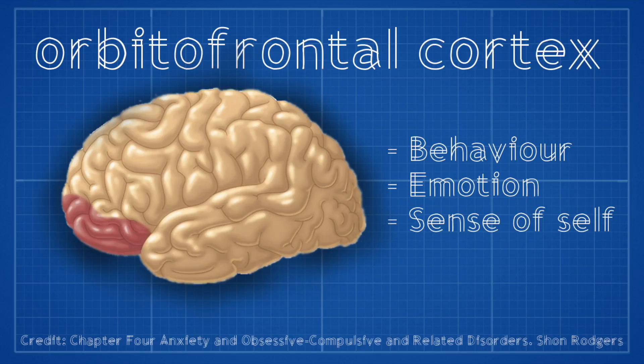In terms of brain activity, some links between Dissociative Identity Disorder and the orbitofrontal cortex have been made. This part of the brain plays a role in mediating behaviours, regulating emotions, and the development of sense of self. Some think that by experiencing a traumatic event in your childhood, this could affect the developing orbitofrontal cortex, and this could then lead to you having an affected sense of self.